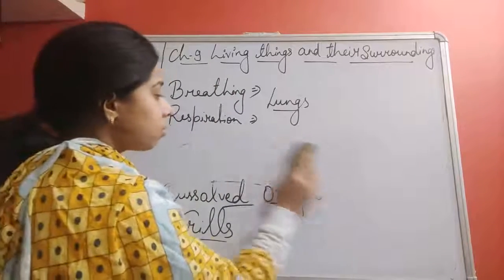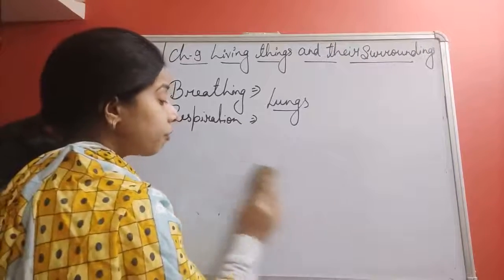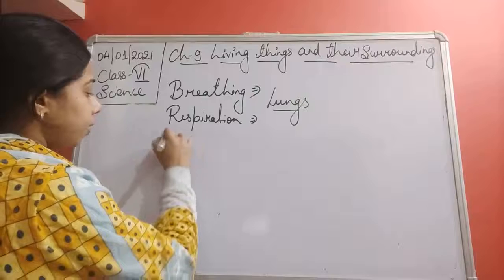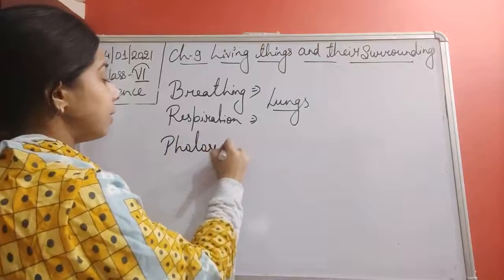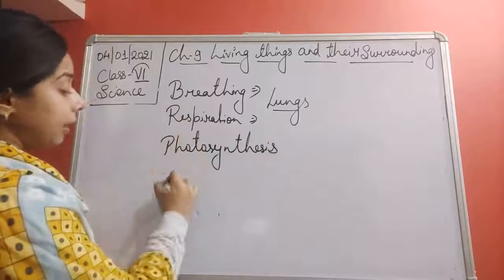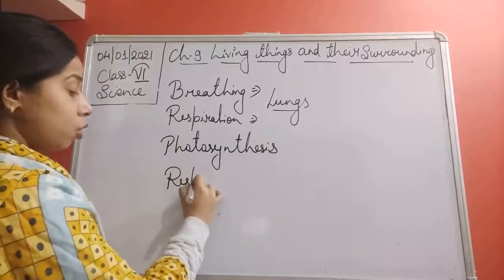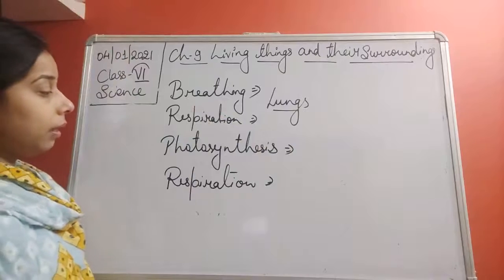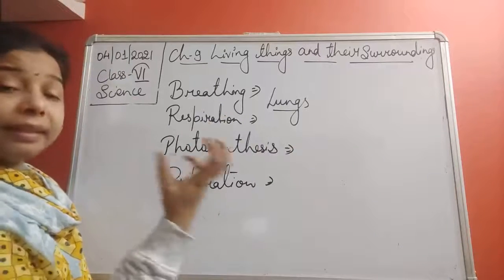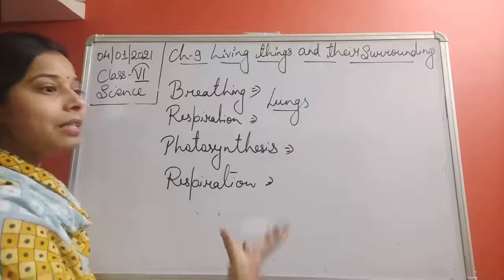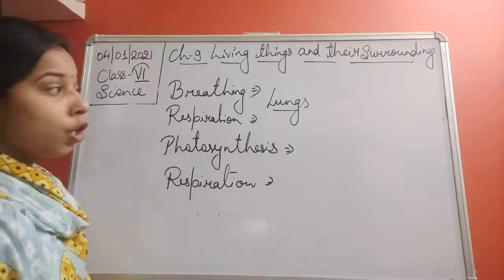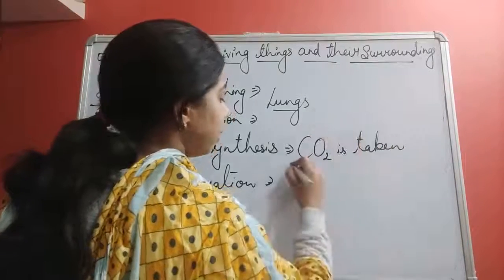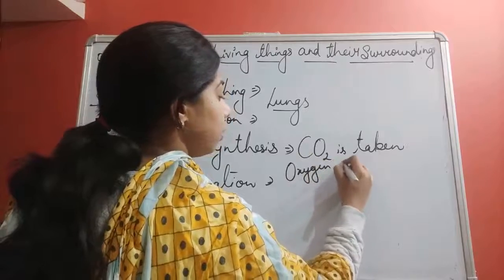Now let us look at plants. Plants perform two types of processes: first is photosynthesis, and second is respiration. In photosynthesis, the plant takes in carbon dioxide and releases oxygen.